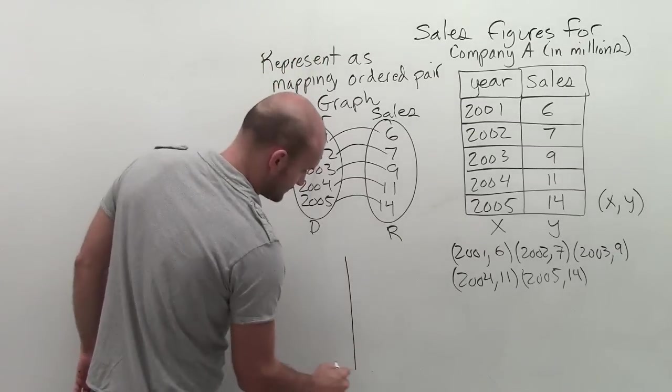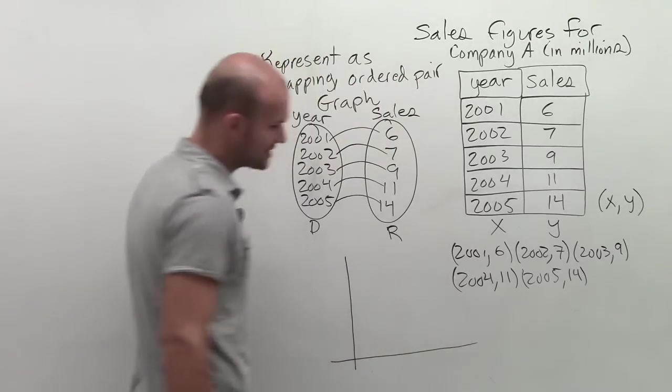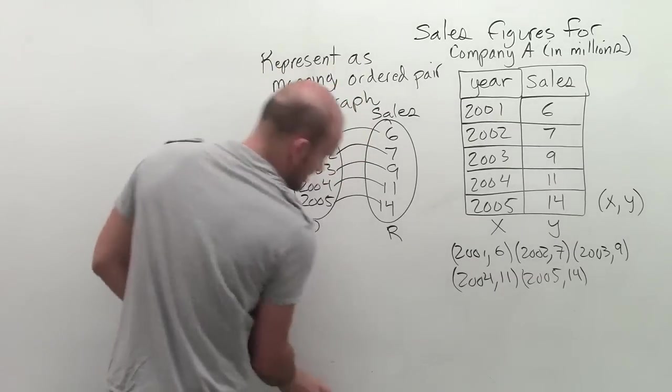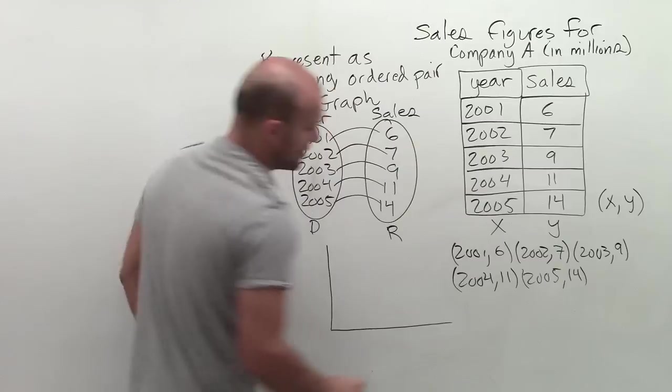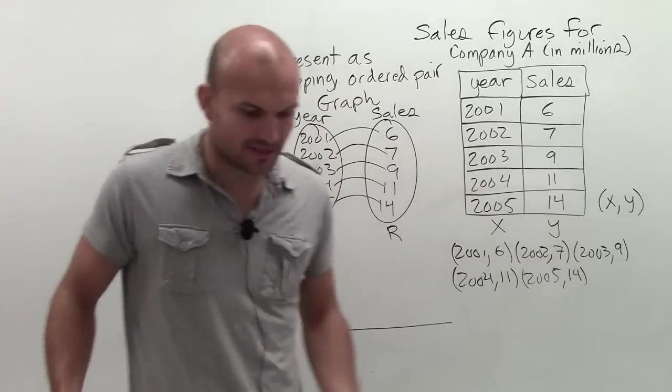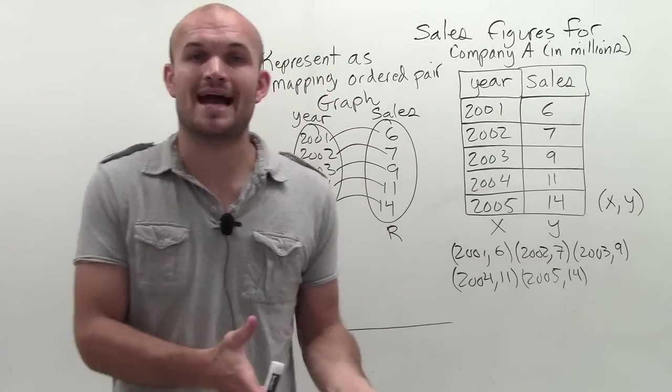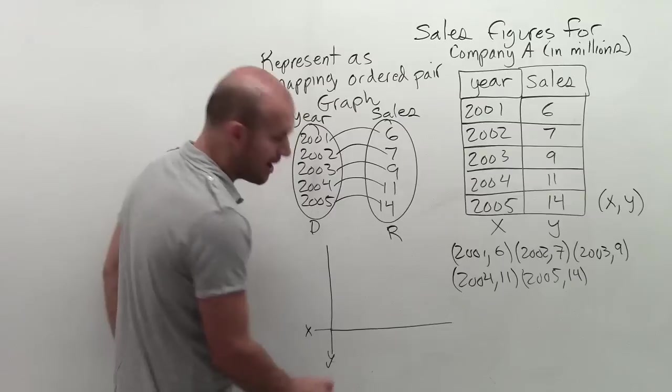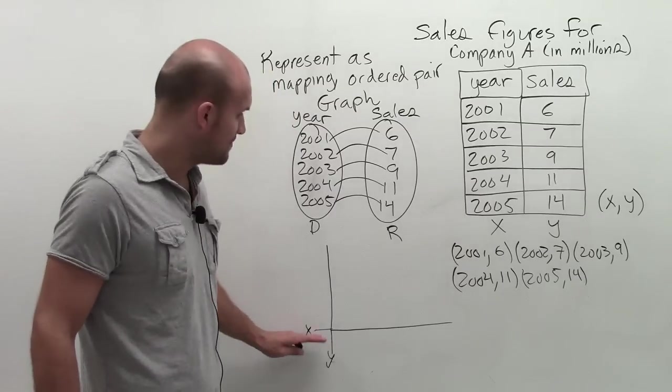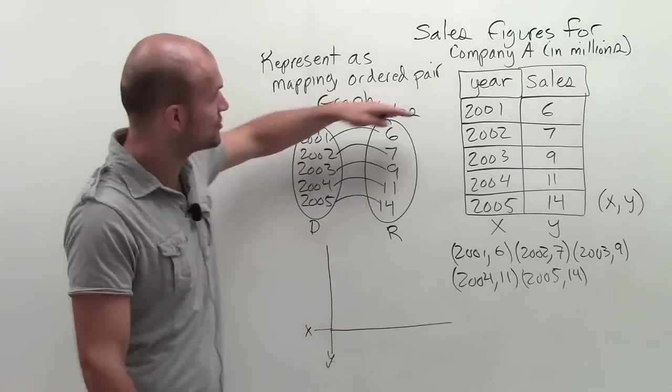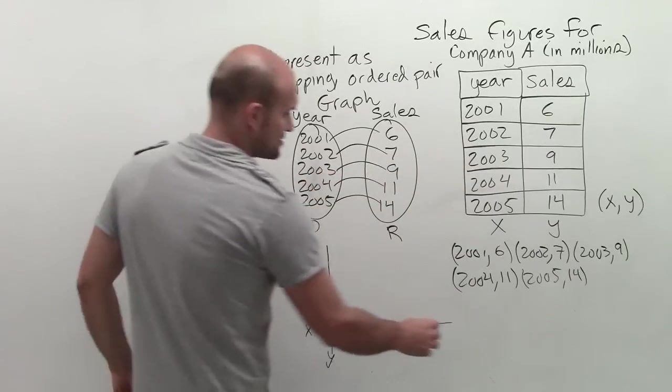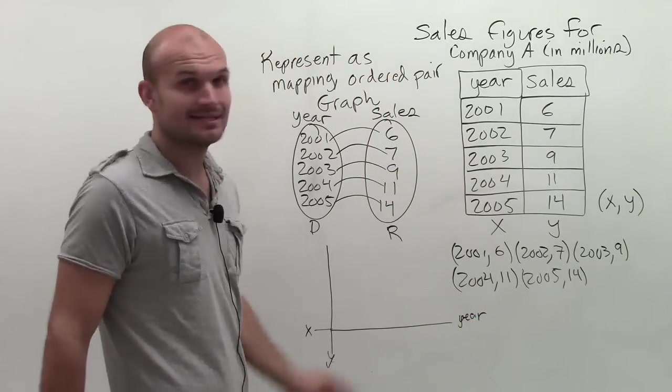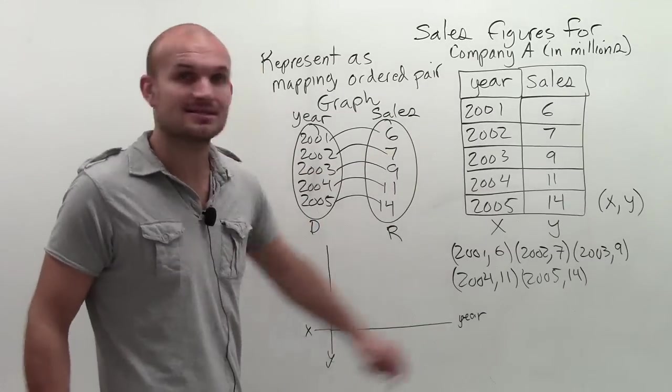And lastly, as a graph. Now hopefully, alright, I'm kind of running out of space as I told you this is going to be a big problem, but I'll try to do my best. So when we have to do it as a graph, there's a couple things we want to remember. Remember a graph, we're going to have an x and a y-axis, right? Well, that's your x-axis, and here's your y-axis. So remember, the domain is on your x-axis. Well, my domain is all my years. So it's always helpful to make sure you label your axis. So my domain, or my x-axis is years. So I'm going to have 2001,